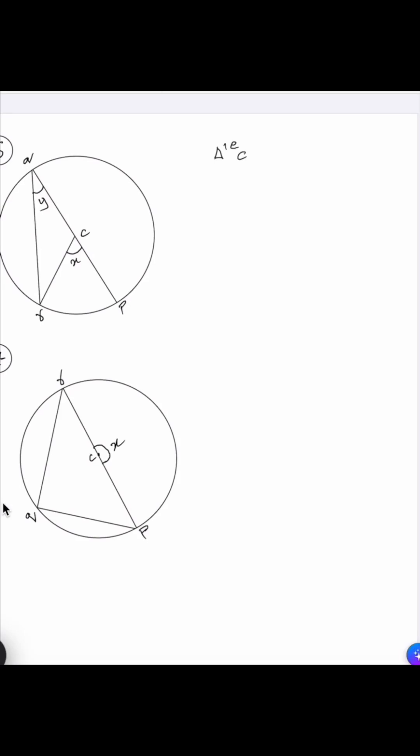Triangle CQR is an isosceles triangle because CQ is equal to CR as both are radius of the circle. So angle at R is equal to y, and the remaining angle at C is equal to 180 minus 2y.